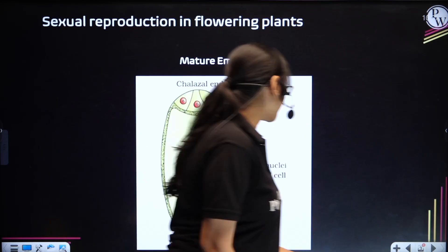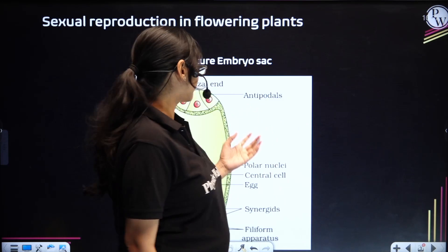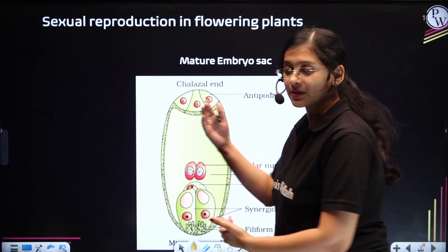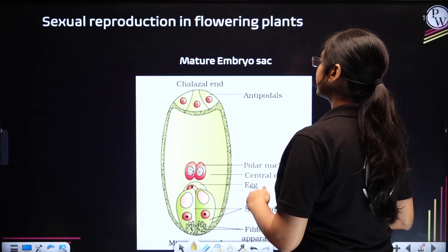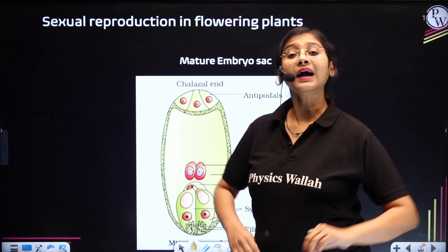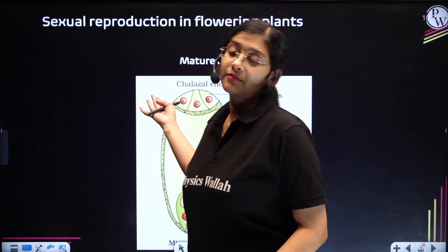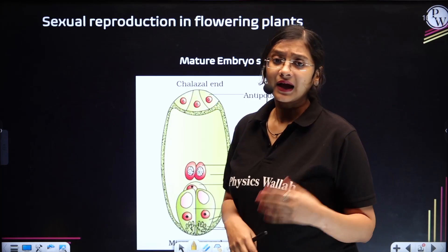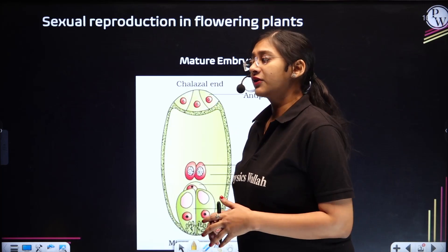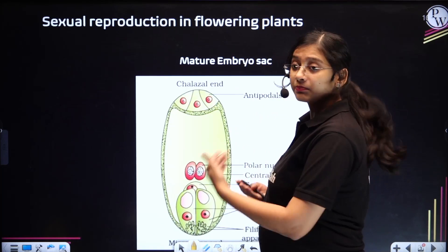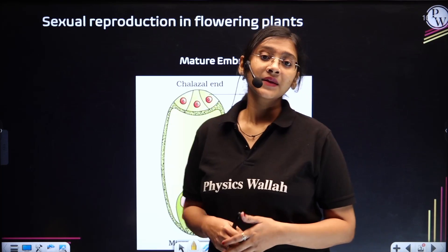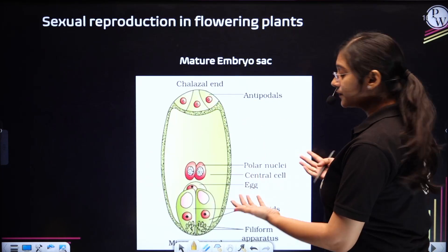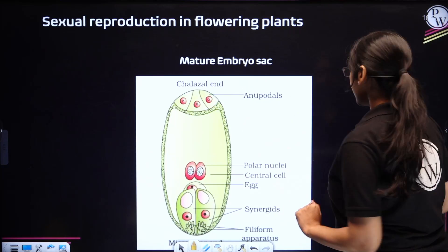The next important diagram from the same chapter is something similar to the previous one. They will be asking you to draw and describe the mature embryo sac. So basically, this particular diagram will be coming for either three marks or five marks. If five marks, they will be asking you to explain the parts of the embryo sac. If it is for three marks, they will be just asking you to draw this.